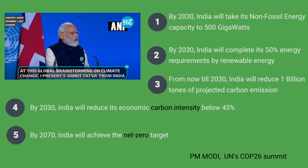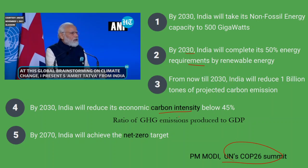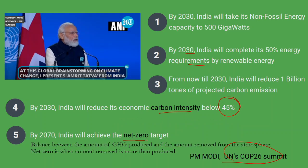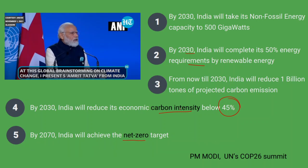Continuing to COP26 summit commitments: India's honorable Prime Minister committed many things under the Panchamrit agenda. India said it will meet 50% of its energy requirement from renewable energy by 2030. One focus was reducing carbon intensity — the ratio of greenhouse gas emissions to GDP — to below 45%. And by 2070, India will achieve net zero, which is the balance between greenhouse gases produced and the amount removed from the atmosphere, targeting to produce less than what is removed.